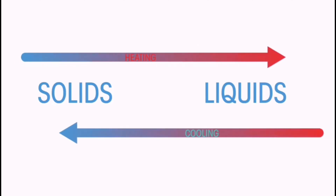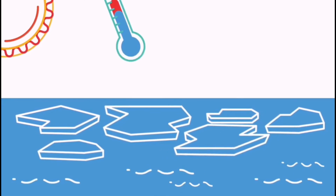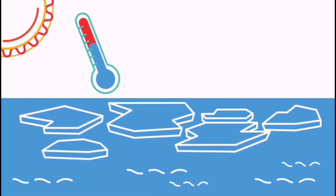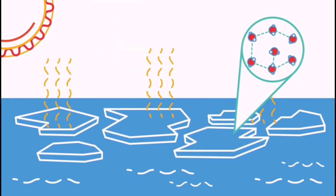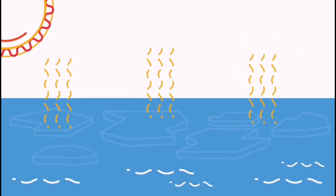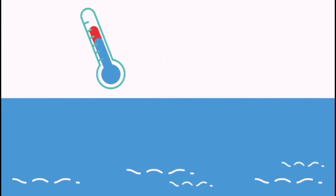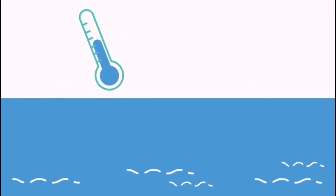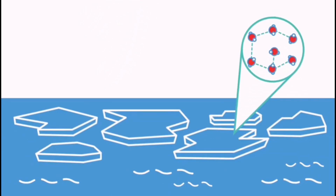Now let's think about the transitions between solids and liquids — melting and freezing. Think of Arctic sea ice: in the summer, when air temperatures are warmer, more heat energy is absorbed by the ice. This causes bonds to break between the ice's water molecules and the ice starts to melt — the solid ice becomes liquid water. But in the winter, air temperatures are colder, so seawater freezes and ice starts to form again. There is less heat energy and so more bonds can form, holding it together as solid ice.